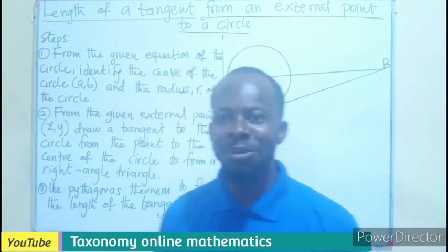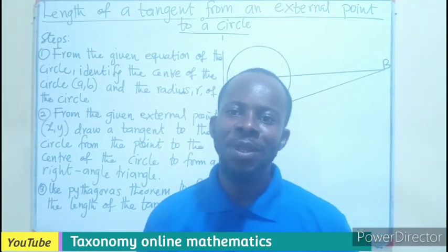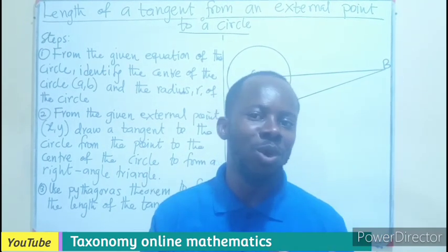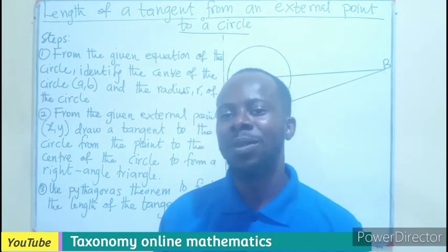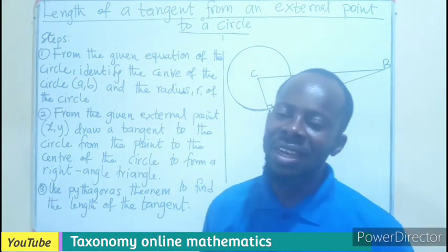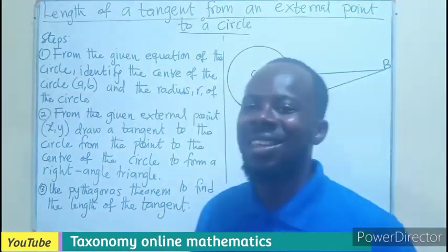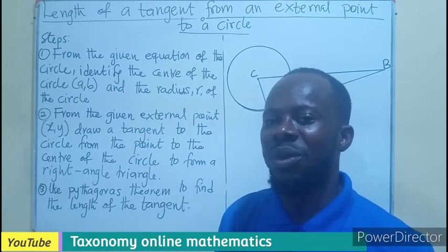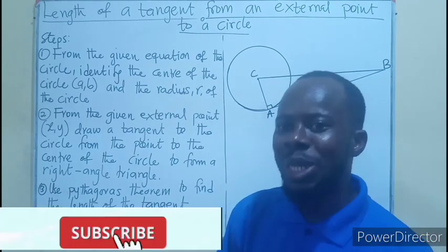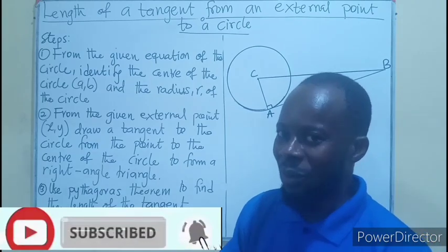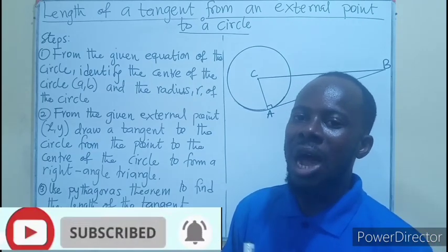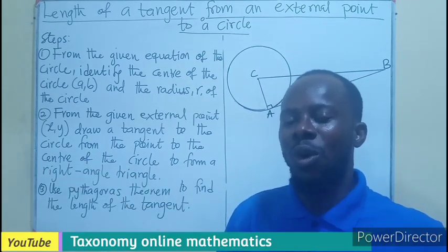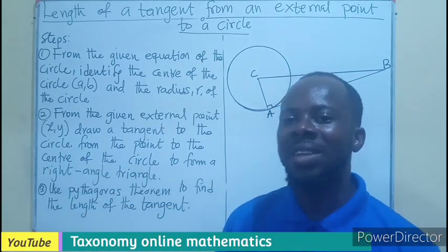Hello viewers, welcome once again to my channel. We are on the series of coordinate geometry 2, the circle. We will be treating the length of a tangent in this episode. In the previous episode, we found how to find the equation of the tangent and the normal. Here we want to find how long the tangent would be from an external point to the circle.